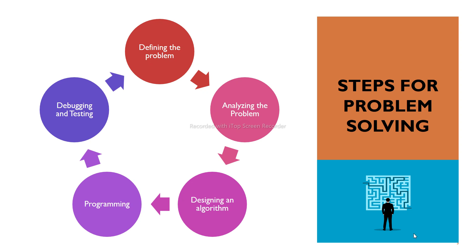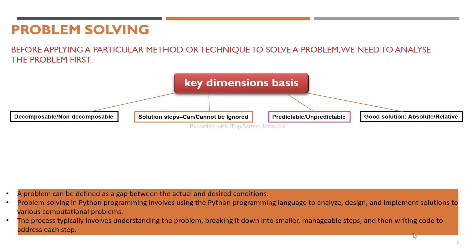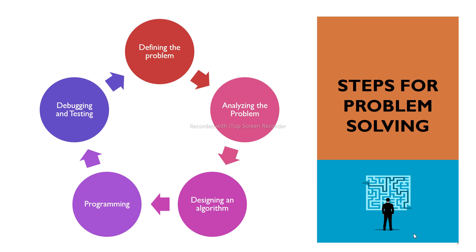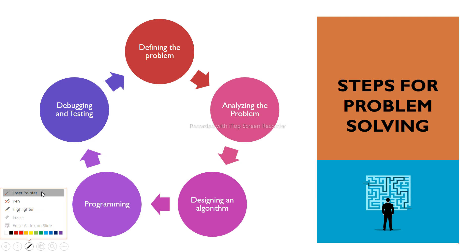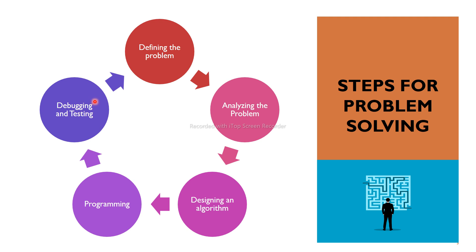Hey everyone, welcome back to the channel. Continuing with the previous topic, we saw how we can go for problem solving with different key dynamic basis. These are the steps involved for problem solving — we can just pause the video and note this diagram. One by one we'll discuss this terminology: first, defining the problem; second, analyzing the problem; third, designing an algorithm; fourth, programming; and debugging and testing.